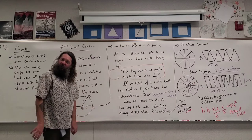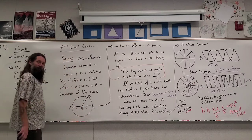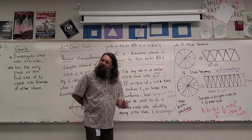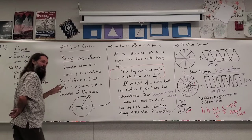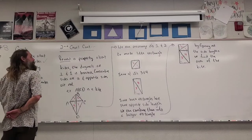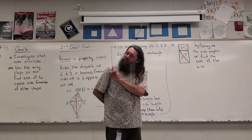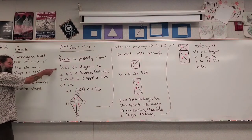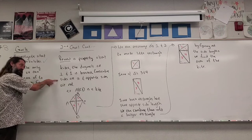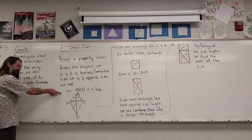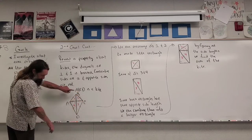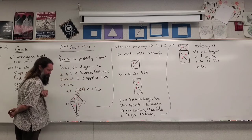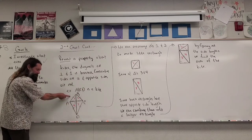I have one more shape — the kite. A property of kites is the diagonals are perpendicular, and one diagonal is bisected. Consecutive sides are congruent, and opposite sides are not. Here's a kite ABCD: diagonal AC got bisected, sides AB and BC are congruent, sides AD and DC are congruent, but opposite sides are not congruent.